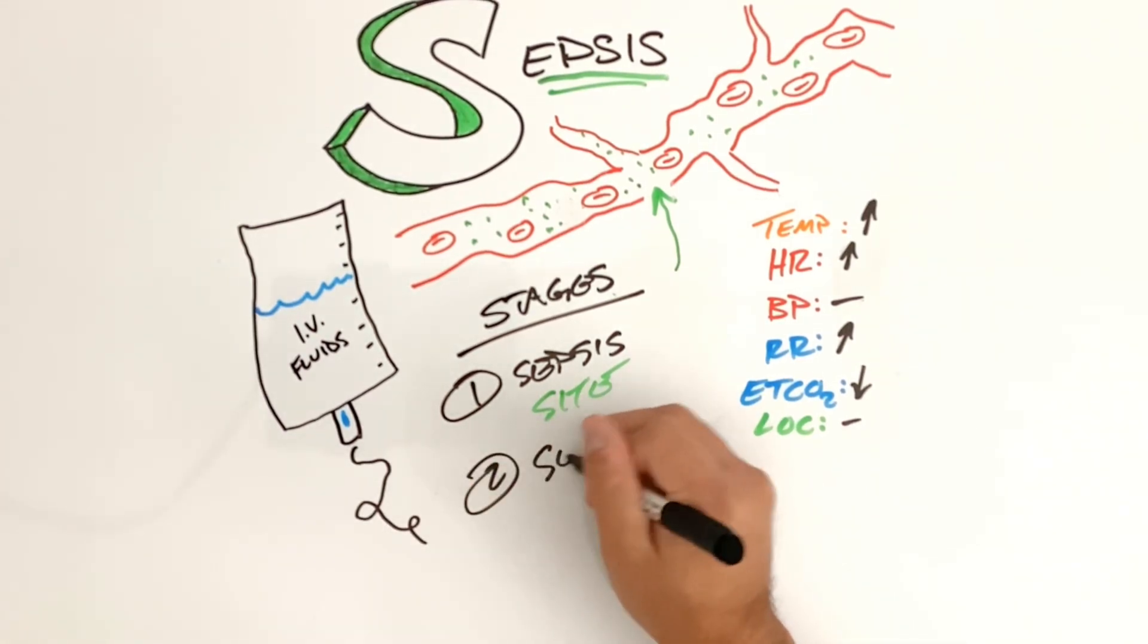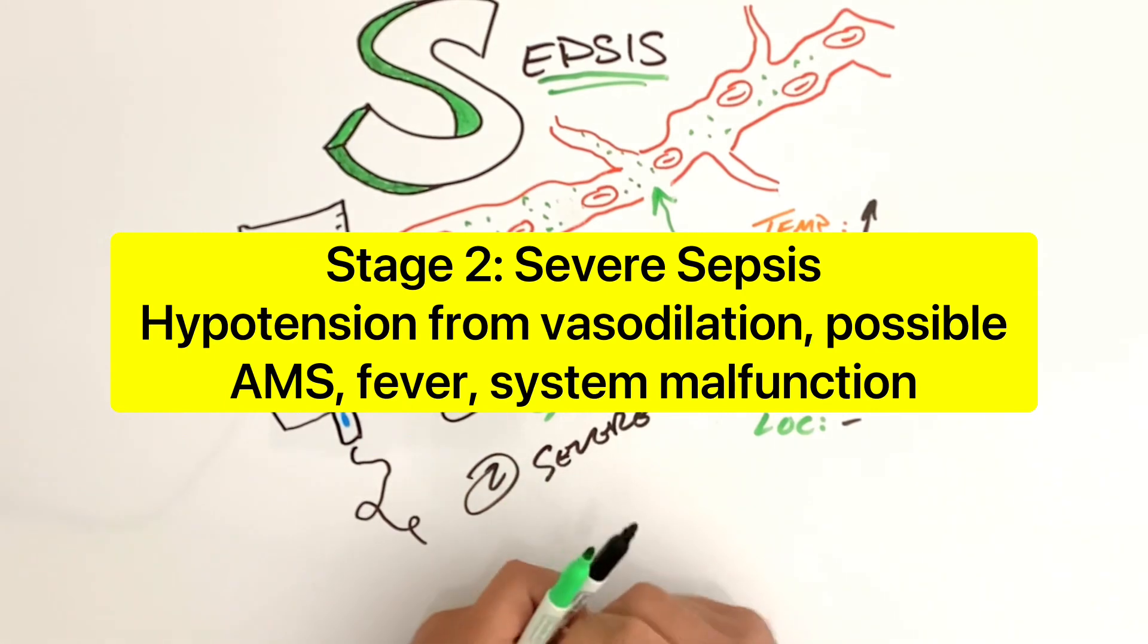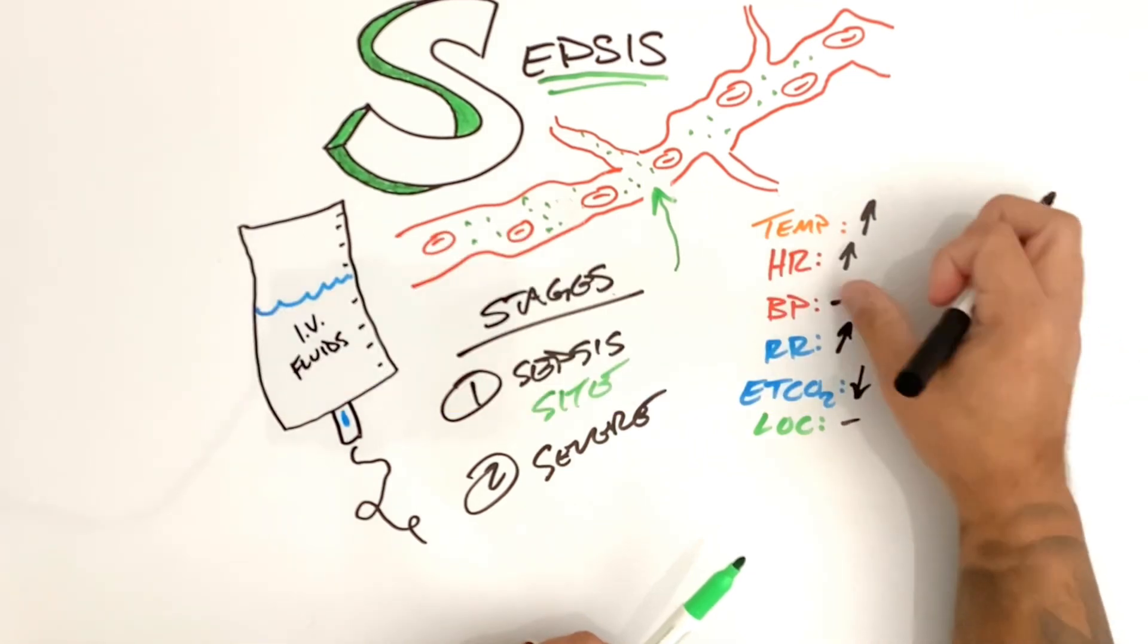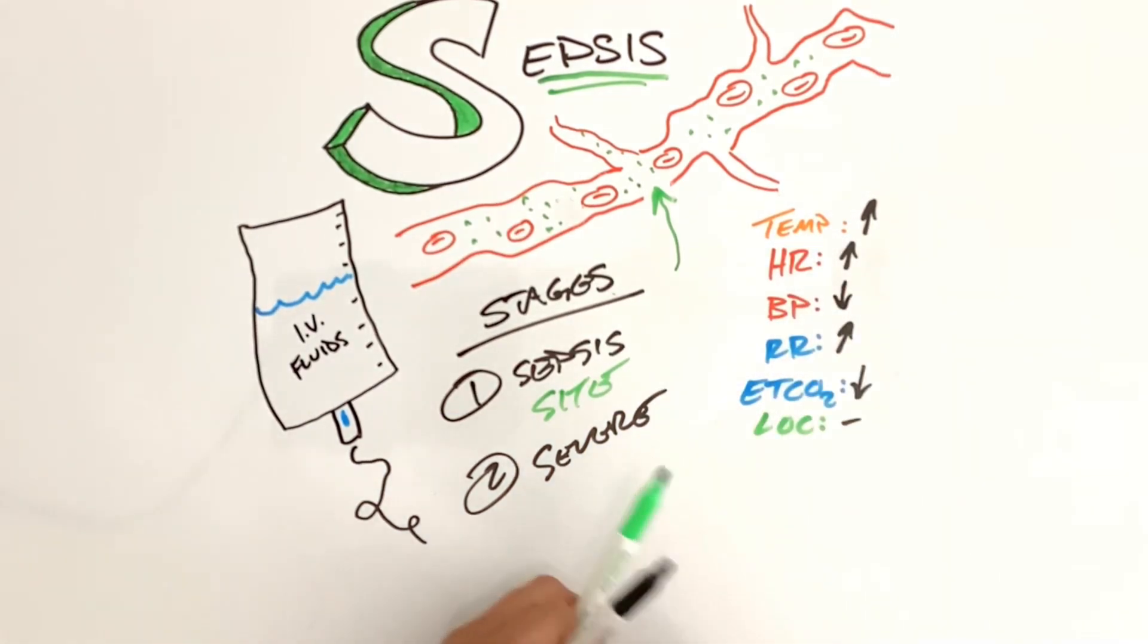Stage two, if it goes untreated, now we're getting into severe sepsis. So with the vital signs, temperature's still up, heart rate's still up. Now because we said it was distributive shock, we're going to have vasodilation. Our blood pressure is going to start to go down a little bit. Our respirations are going to continue to stay up because we're still trying to compensate, especially now that we have vasodilation. End tidal is continuing to drop because our respirations are up. Level of consciousness could be the same, it may be a little bit different. Patients are feeling weak. If they're hypoxic or their blood pressure starts to get too low, they may have a little bit of altered mental status.